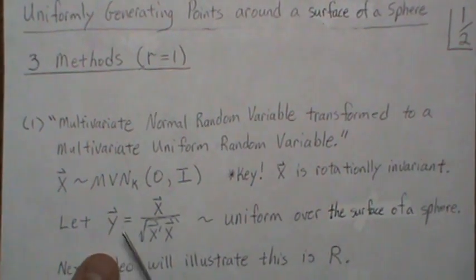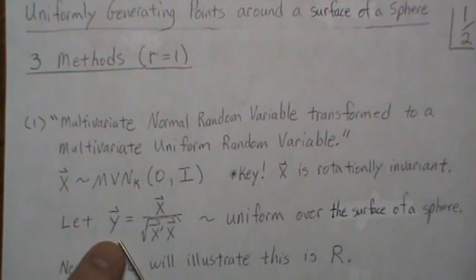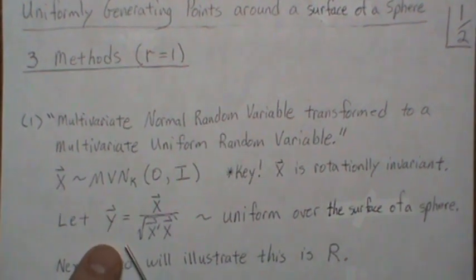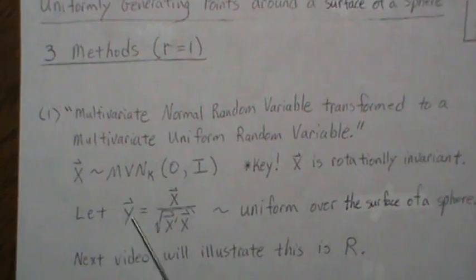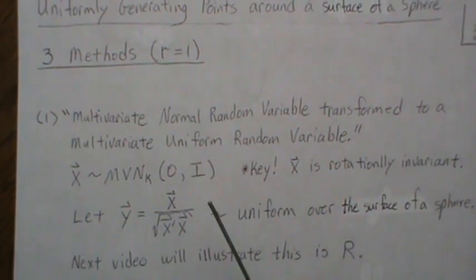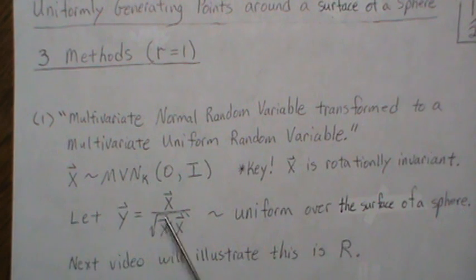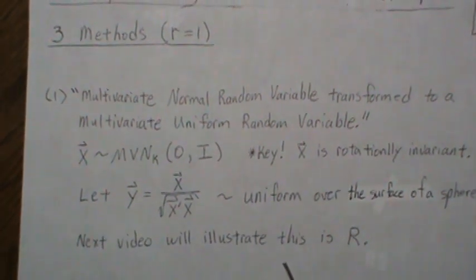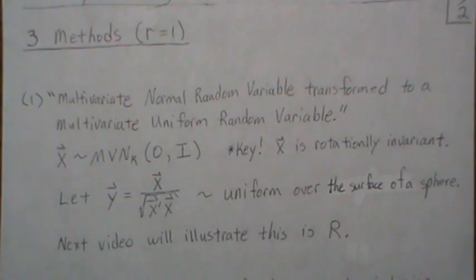The transformed vector Y is uniform over the surface of a sphere. If the vector has two components you plot it in R2 space and get a circle; three components gives a sphere; and even for four or more dimensions it still works, though you can't plot it. The next video will illustrate this in R.